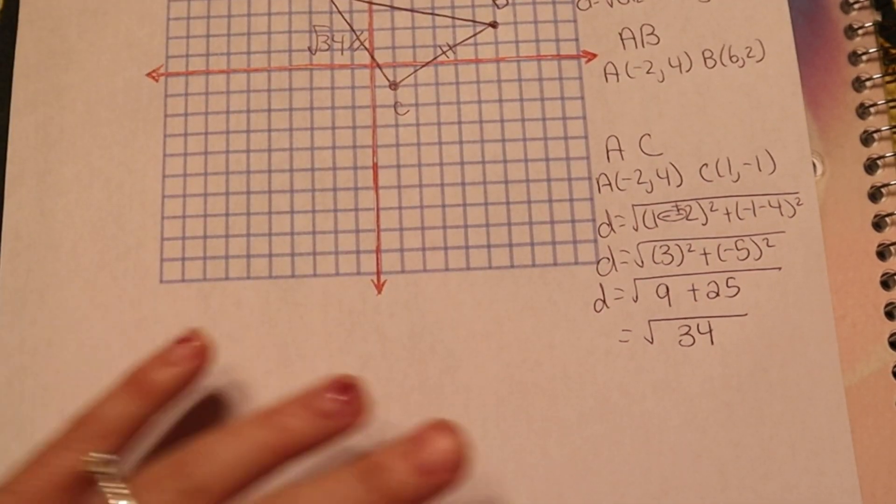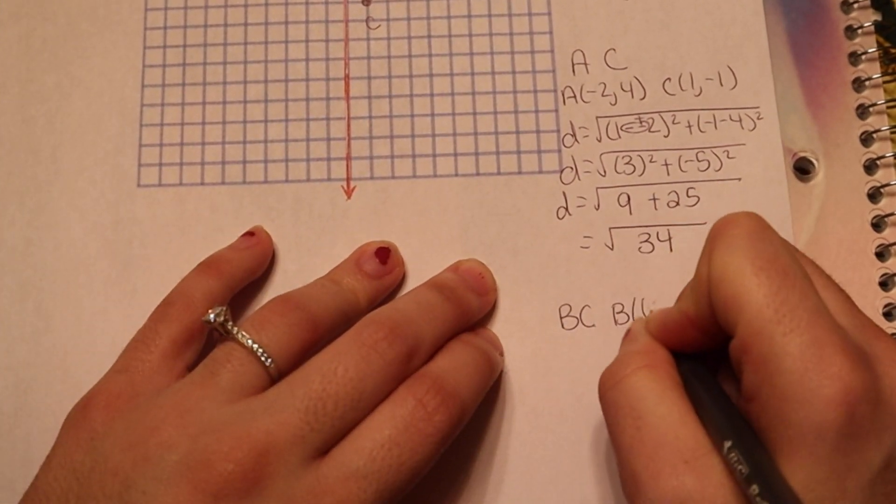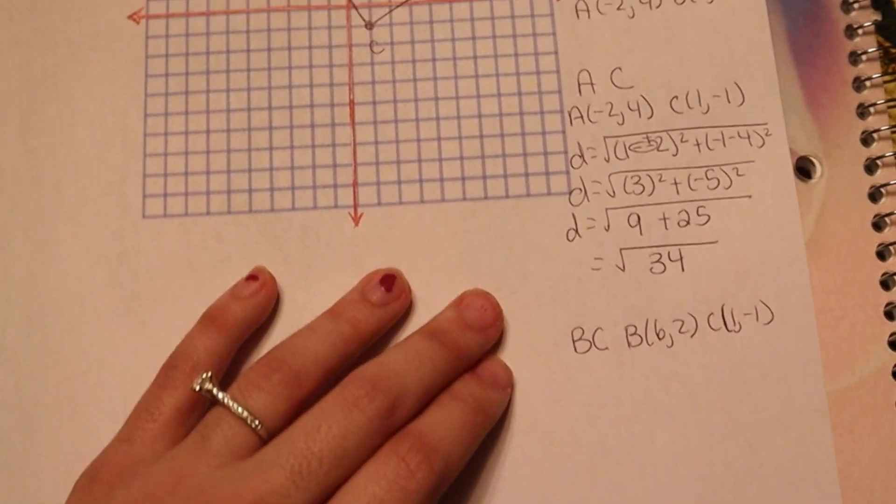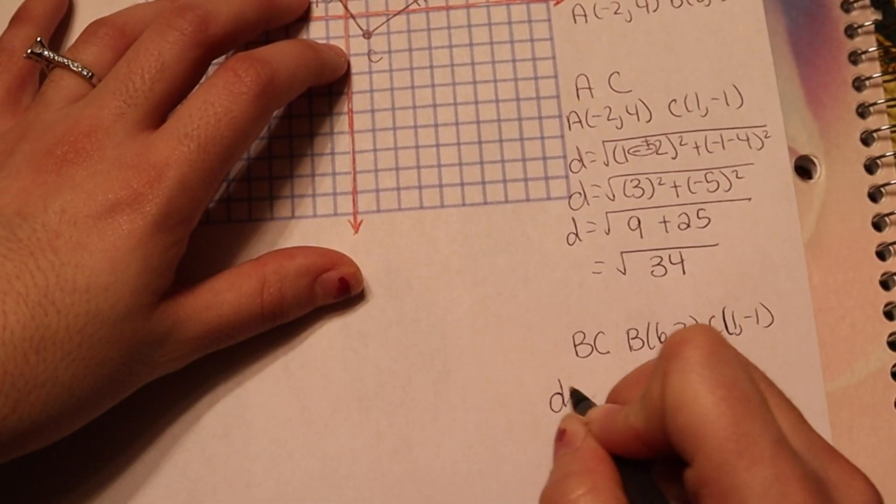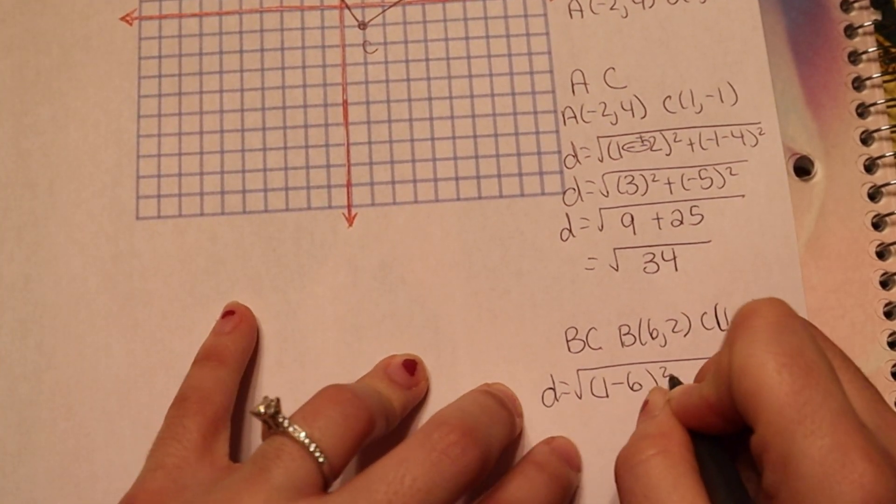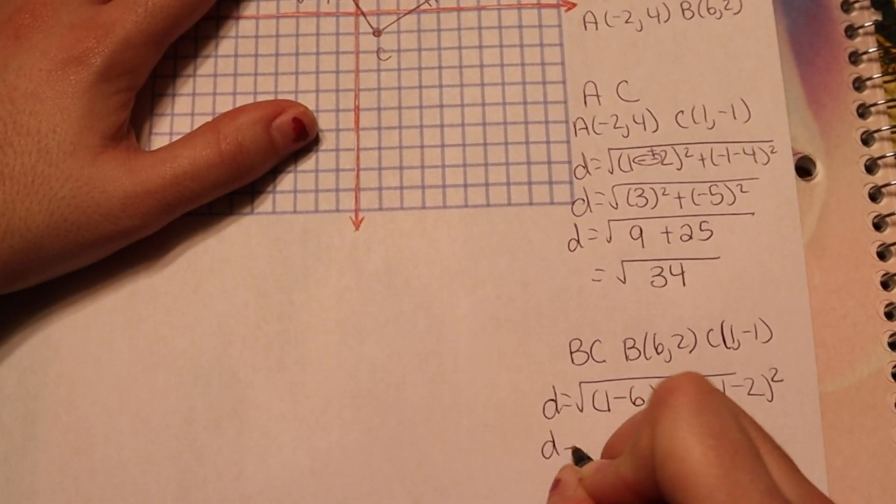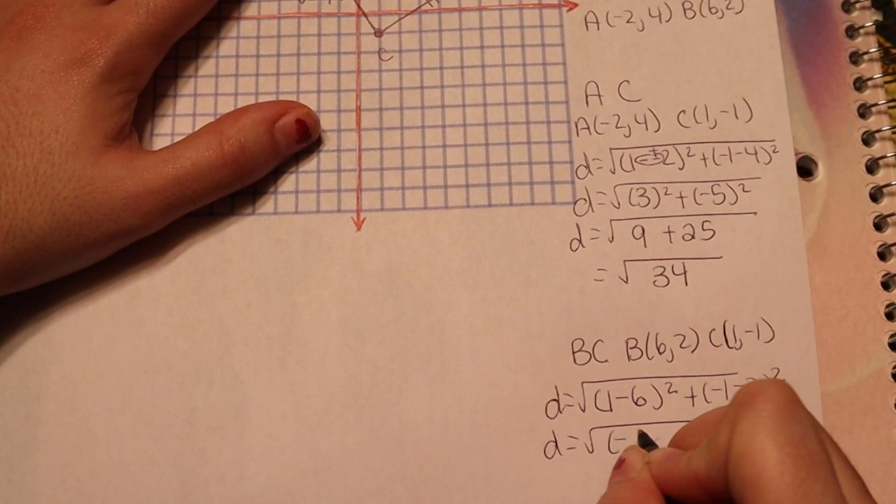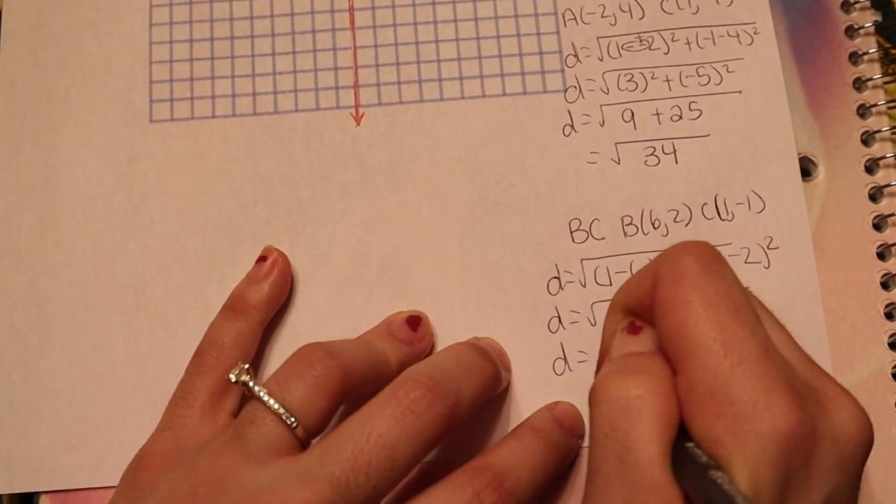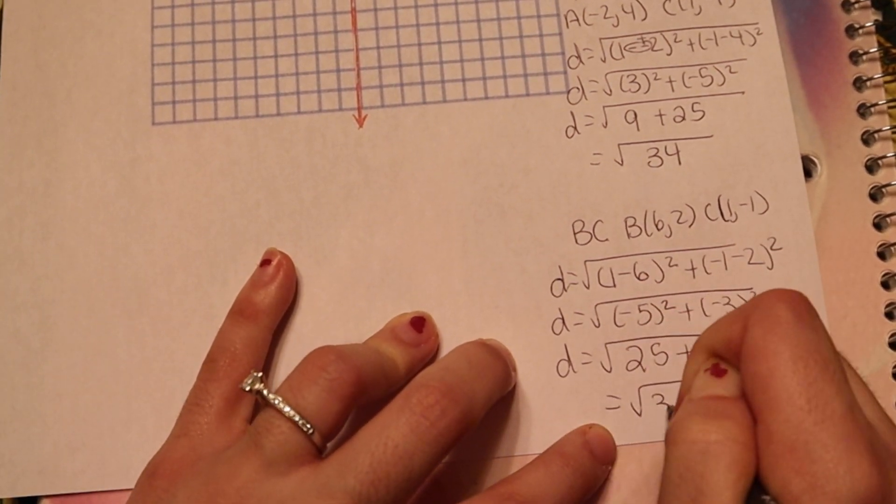All right, why don't we go ahead and find the length of CB now, or BC. So B is 6, 2. C is 1, negative 1. D equals the square root, 1 minus 6 squared plus negative 1 minus 2 squared. This will be negative 5 squared plus negative 3 squared, which will be 25 plus 9, which is, again, radical 34.